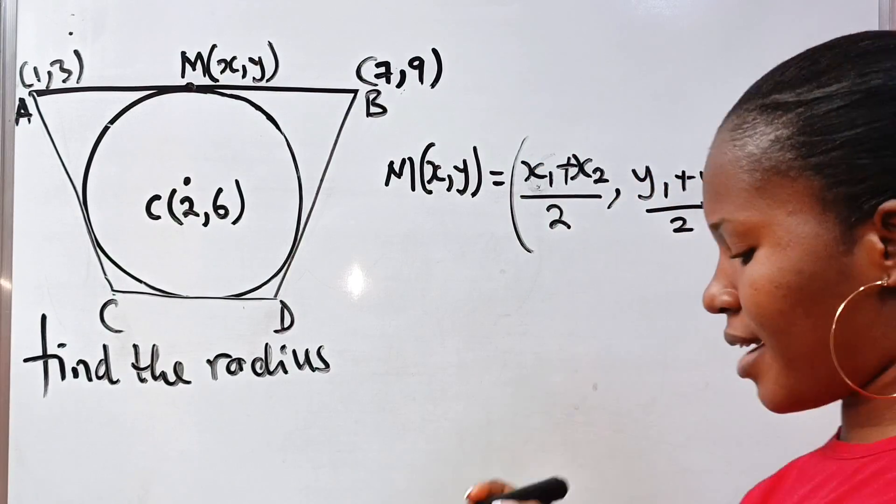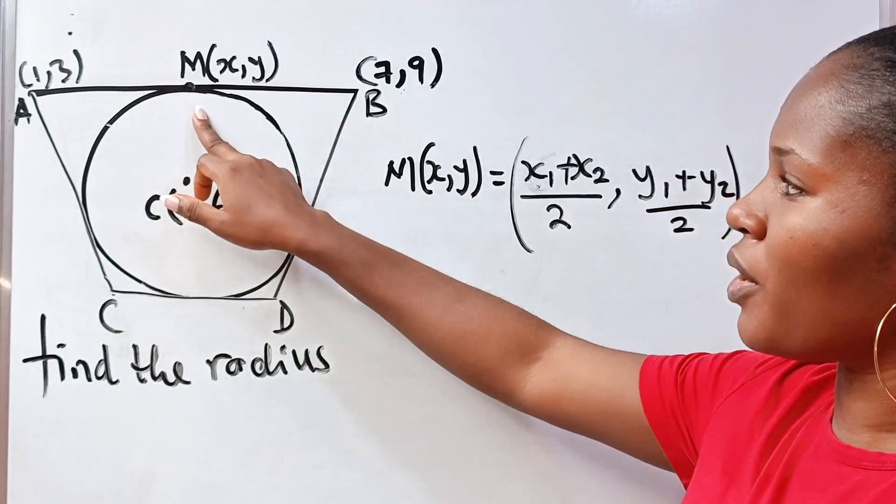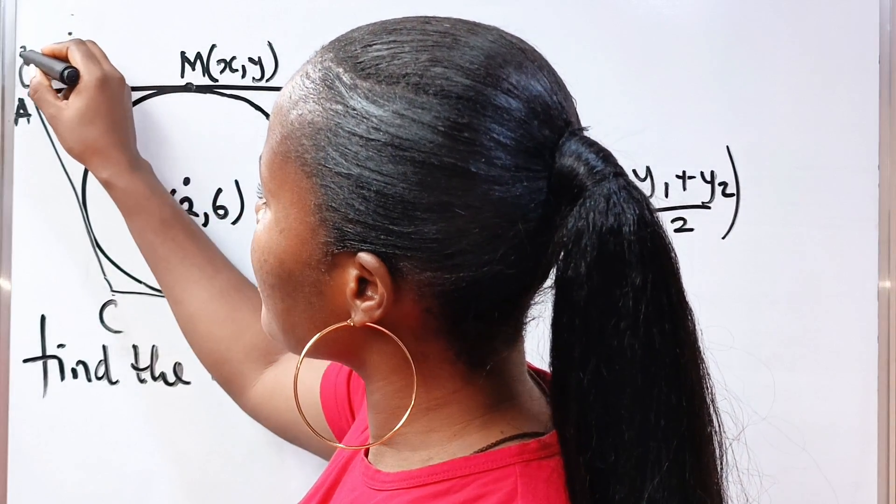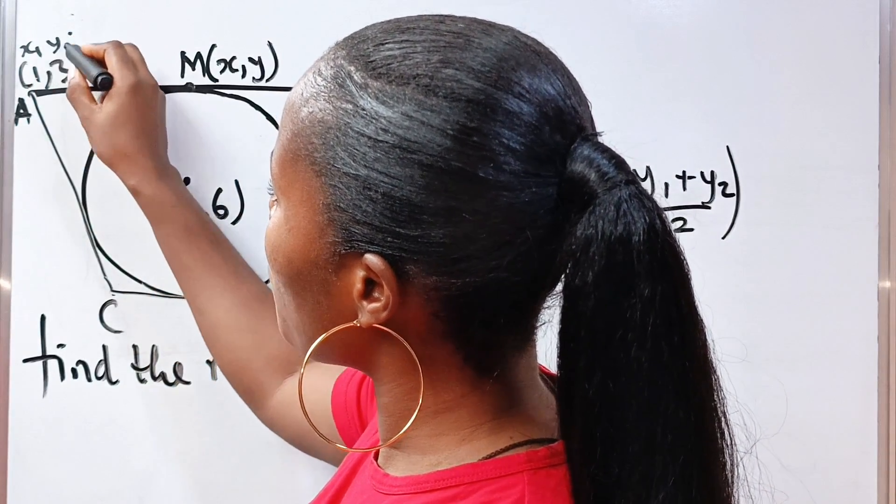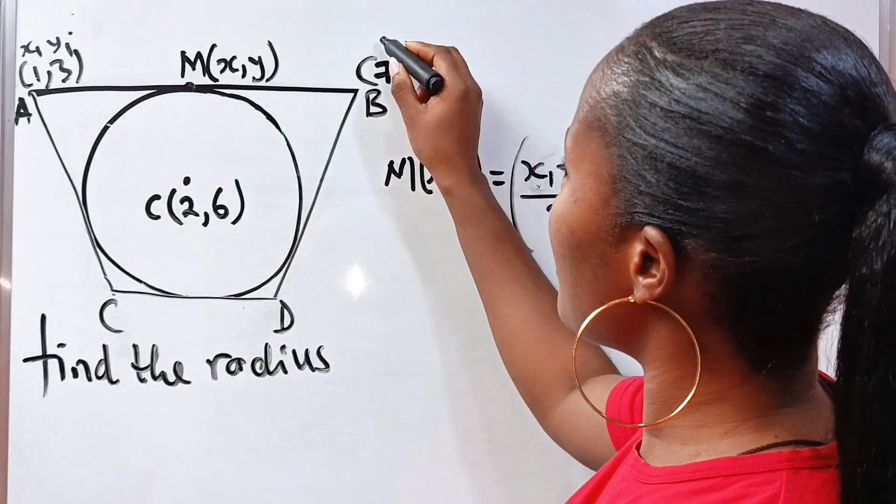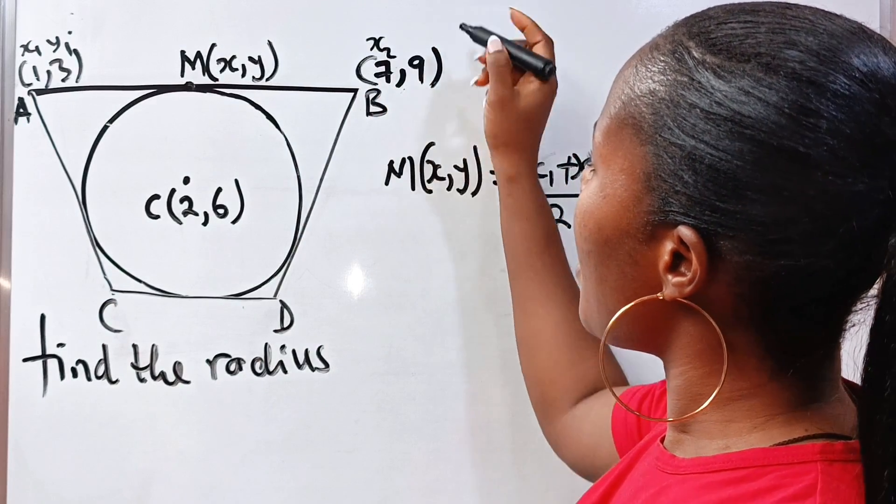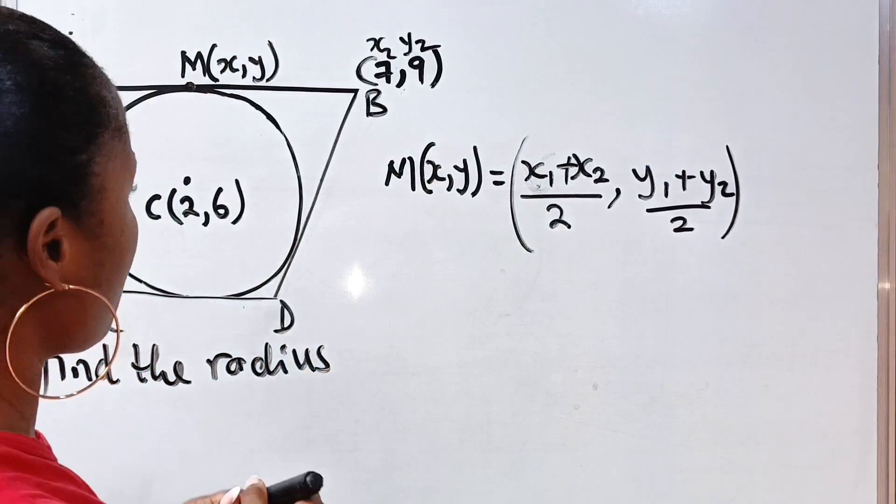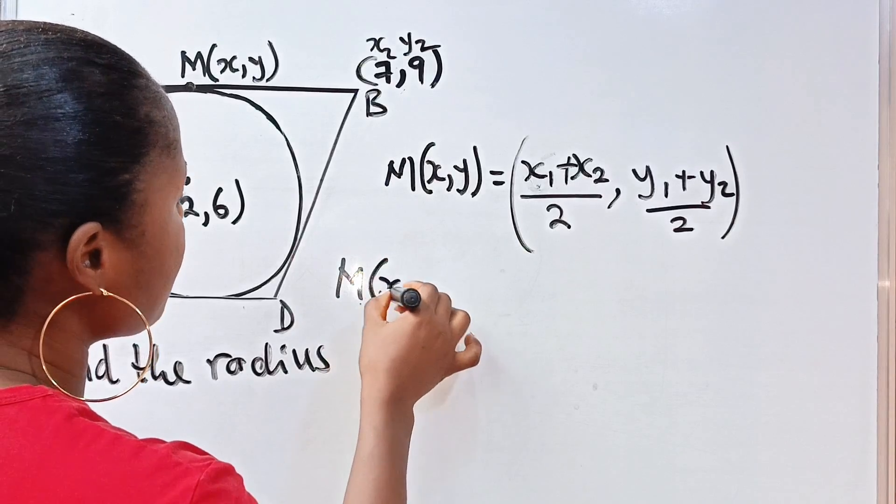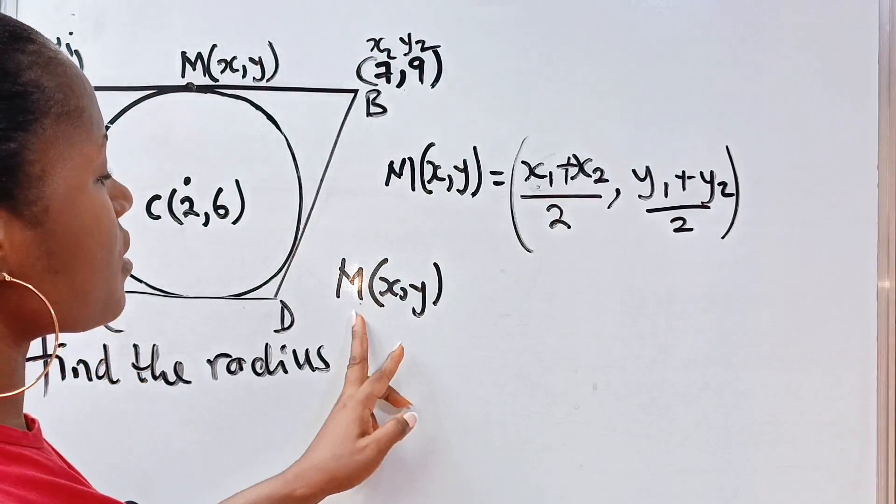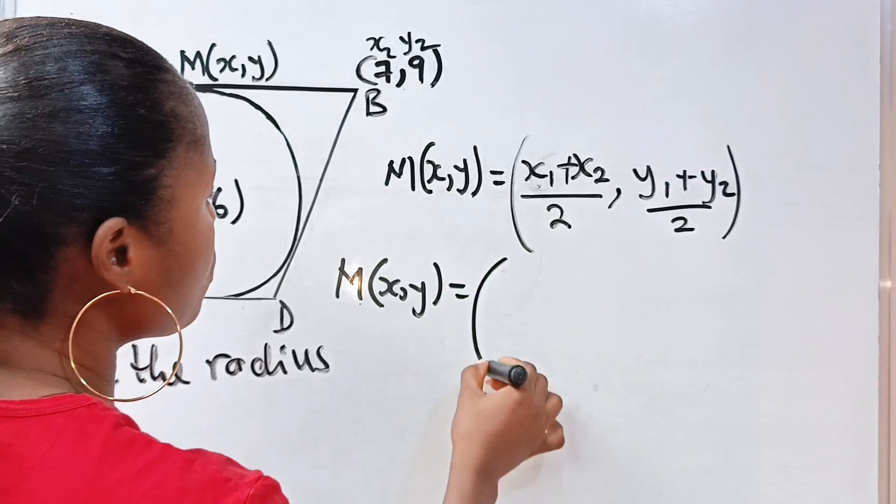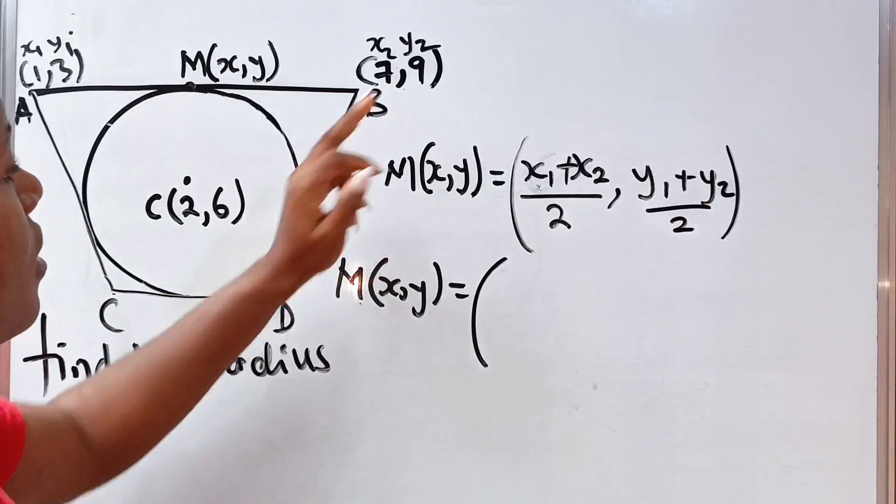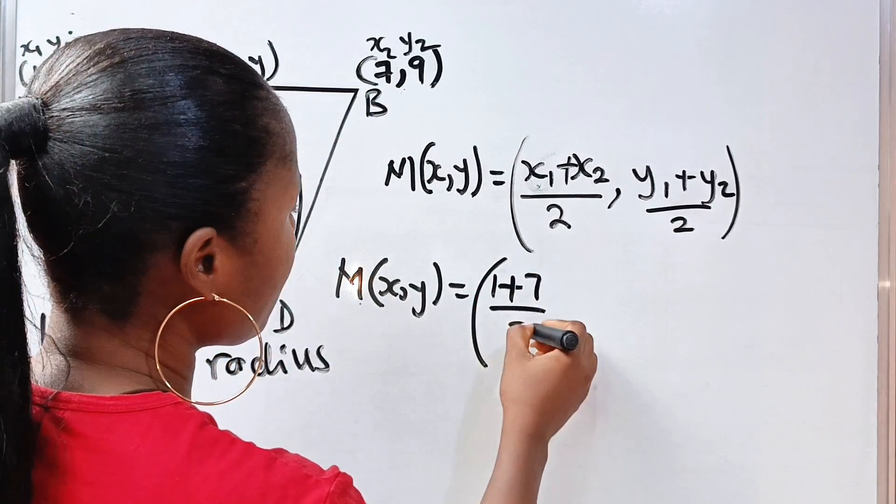So that is the x and the y-coordinate of the midpoint of A and B, whereby we can decide to name this as 1 as x1 and 3 as y1. So this means that this is x2, that is 7 is x2 and 9 is y2. Now, if we substitute, we have that the midpoint, that is x, y, the coordinates of the midpoint will be equal to x1 is 1, so we have 1 and x2 is 7, so it's going to be 1 plus 7 divided by 2.